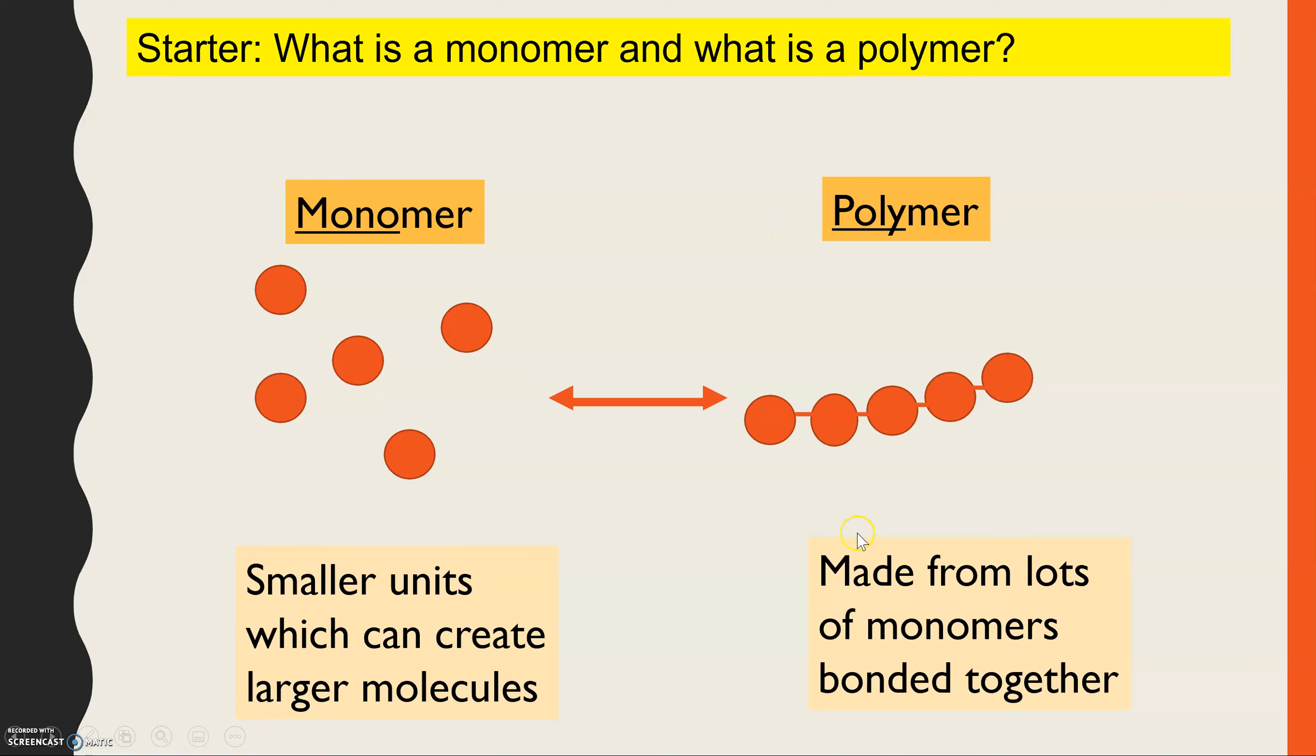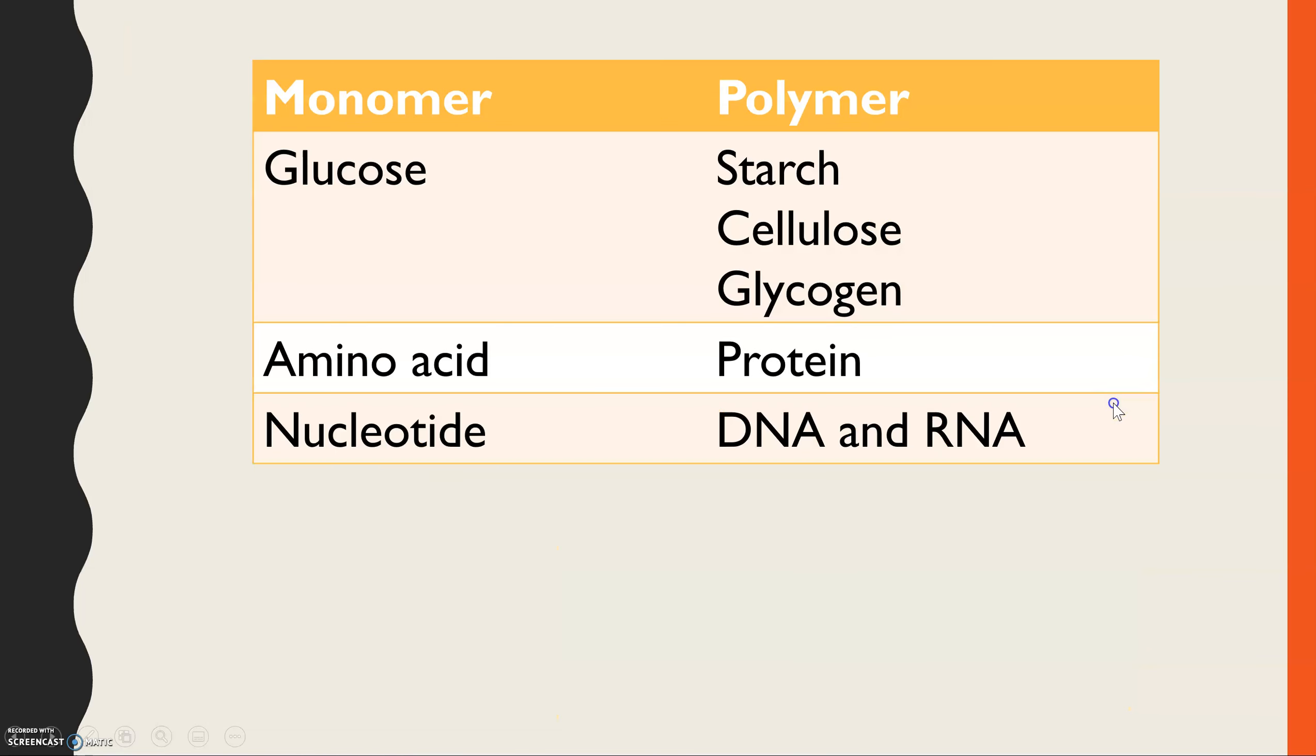Polymers meaning many. So these are made from lots of monomers and they are bonded together to create the polymer. And we learn about quite a lot of monomers and polymers in biological molecules.